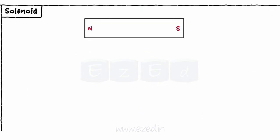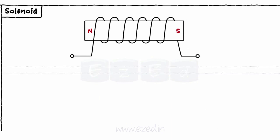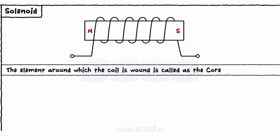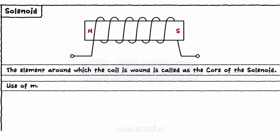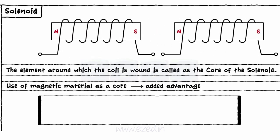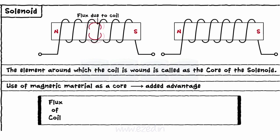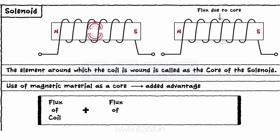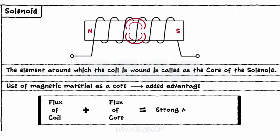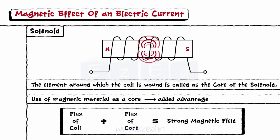The term solenoid refers to a long thin loop of wire often wrapped around a metallic core. The element around which the coil is wound is called the core of the solenoid. The use of a magnetic material as a core becomes an added advantage. When the current flows through the coil, it produces the flux. Also, the core being magnetic produces its own flux. These two fluxes being in the same direction build a strong magnetic field.